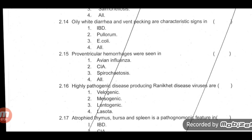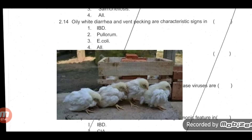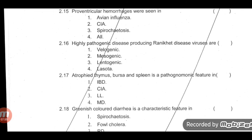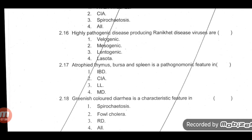Oily white diarrhea and vent pecking are characteristic signs in pullorum disease — second option is correct. Proventricular hemorrhages are seen in spirochetosis — third option is correct. Highly pathogenic disease-producing Ranikhet disease virus strains: you should know the three strains — velogenic, mesogenic, and lentogenic. Velogenic is the correct answer as it is the highly pathogenic strain of RD virus.